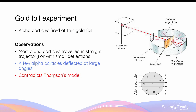This experiment contradicted Thomson's model, because if Thomson's model of the atom was true, the alpha particles would have passed straight through the atom, as the presence of negatively charged electrons would have played no role in the trajectory of the much heavier alpha particles. If Thomson's model was correct, most of the alpha particles would have passed straight through with little to no deflection, and none would have been deflected at a very large angle. The electrons in the plum pudding model wouldn't have been able to cause deflection of such a large angle, because electrons, although negatively charged, are much lighter in mass compared to alpha particles.